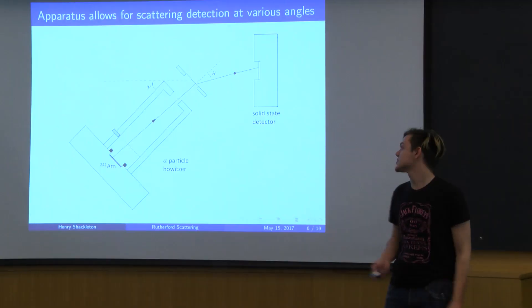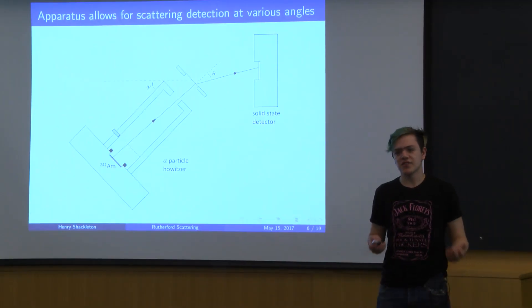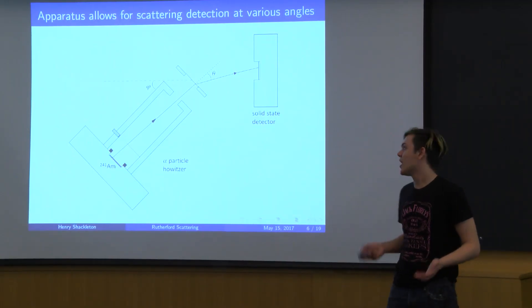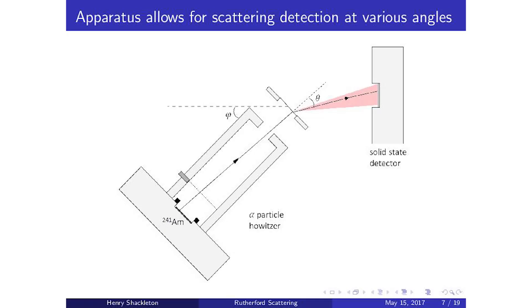In practice, however, this is not the case. Our solid-state detector is a few centimeters wide, which allows for a range of scattering angles theta to be detected for a given howitzer angle phi. In addition, our beam has some width, which allows further angles to be detected for a given howitzer angle phi.